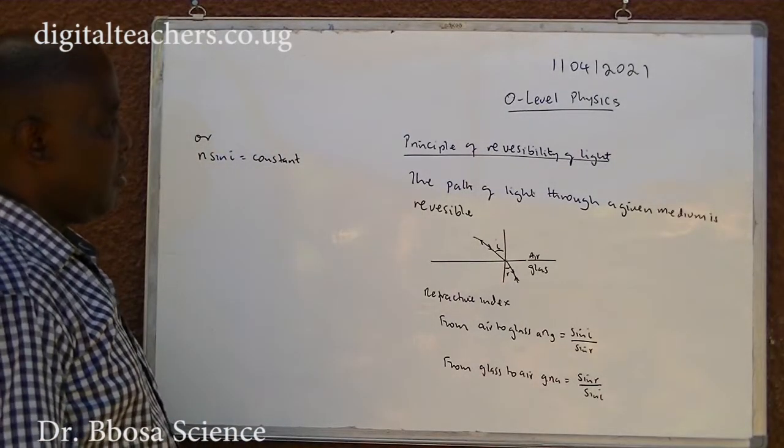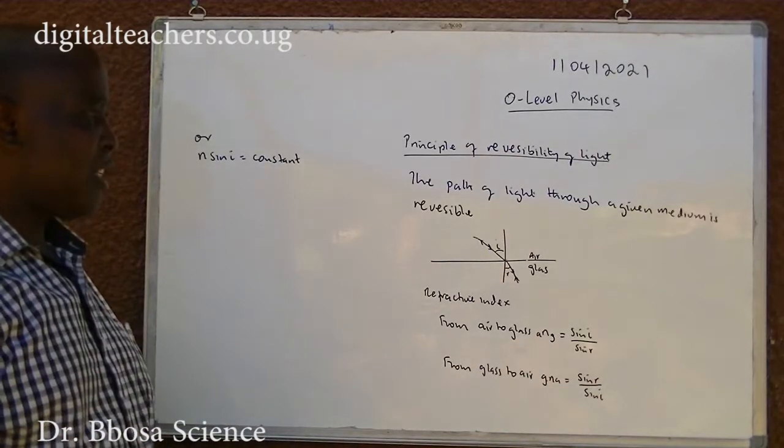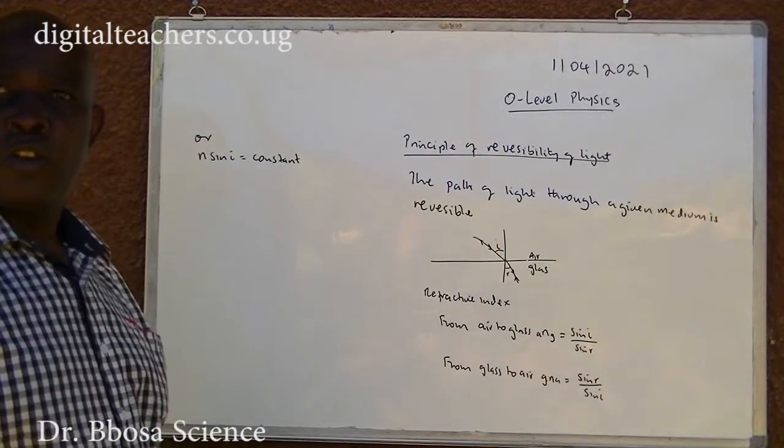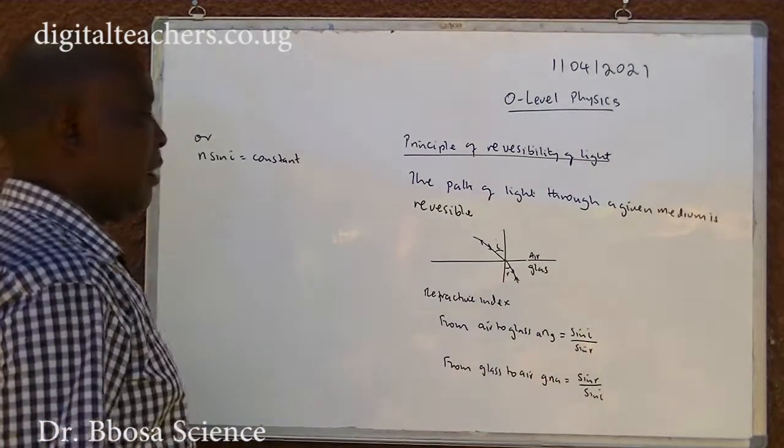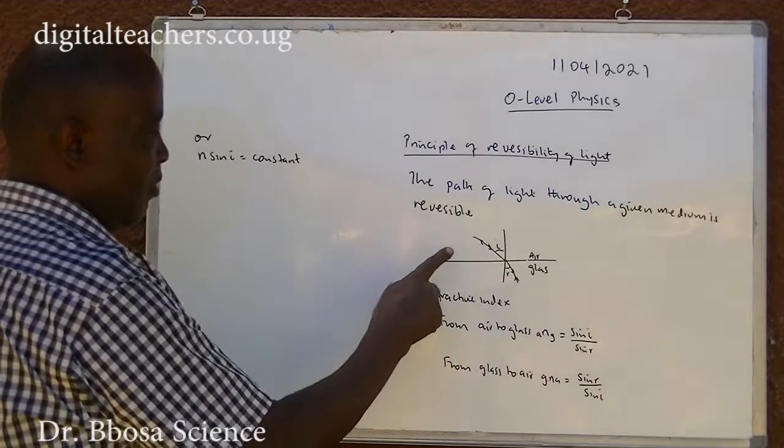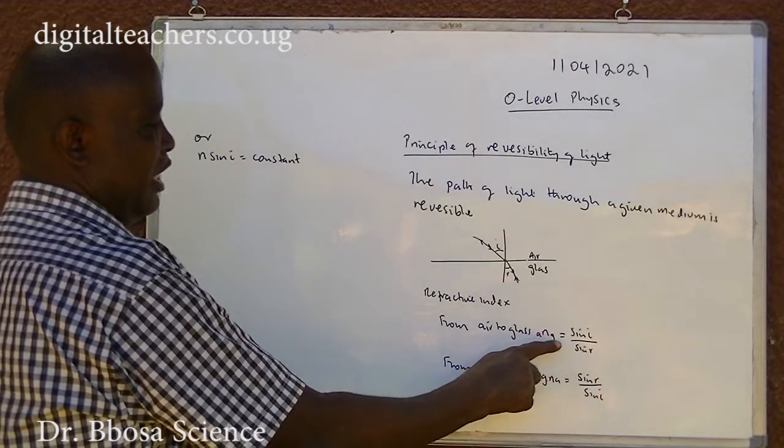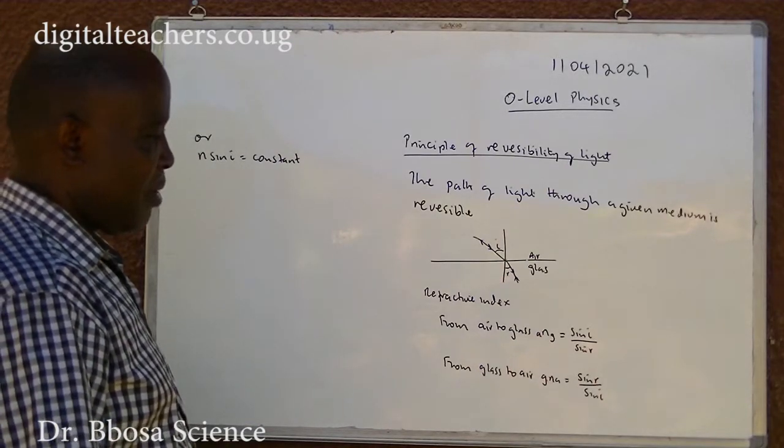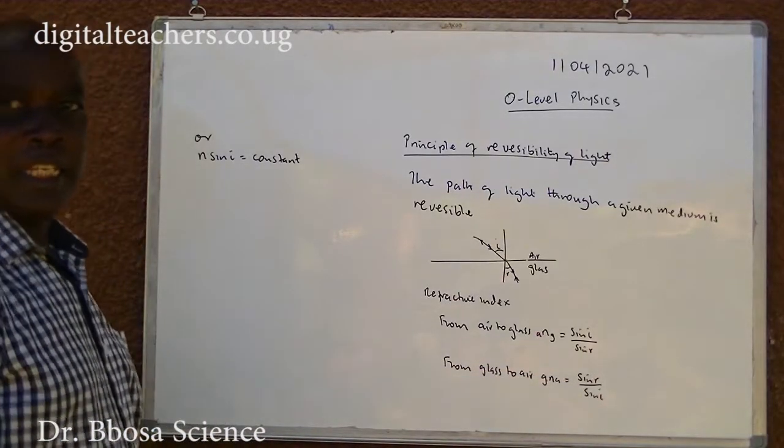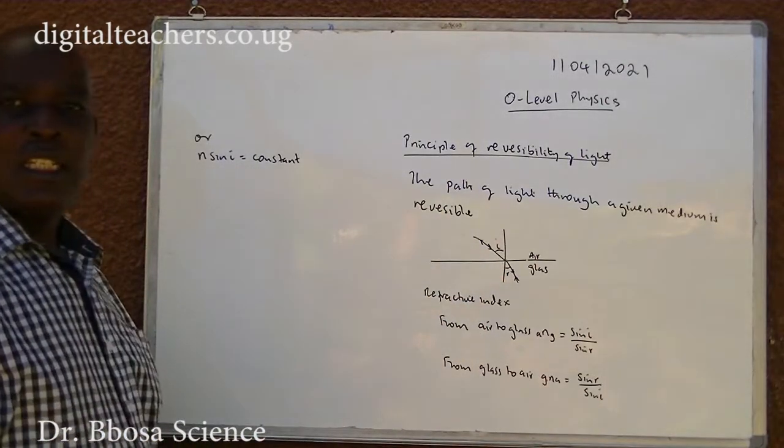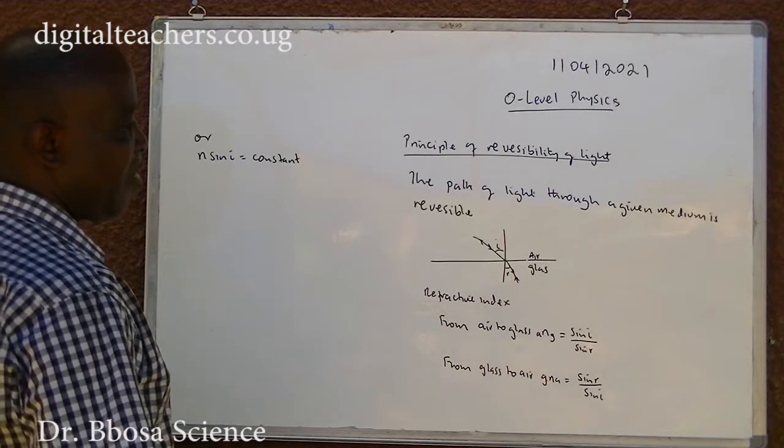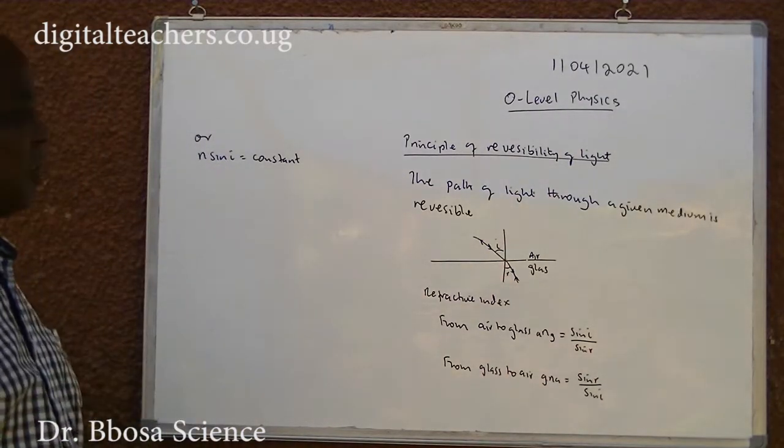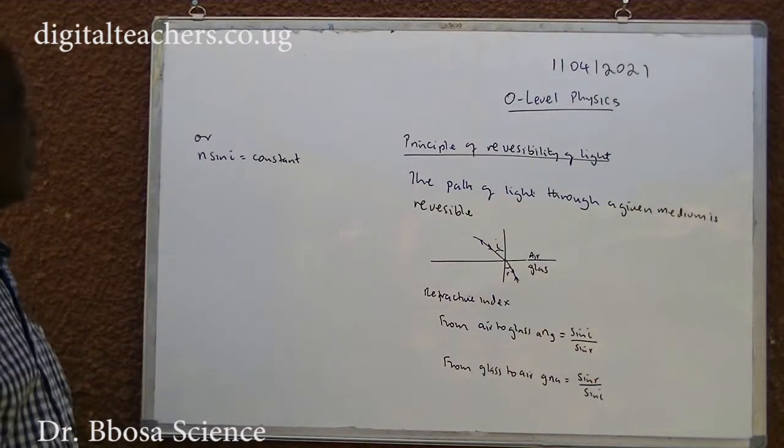Principle of reversibility of light states that the path of light through a given media is reversible. So light from air to glass follows the same path when reversed from glass to air. The refractive index from air to glass is equal to sine I over sine R. From glass to air it's sine R over sine I. So the refractive index from air to glass is an inverse of refractive index from glass to air.